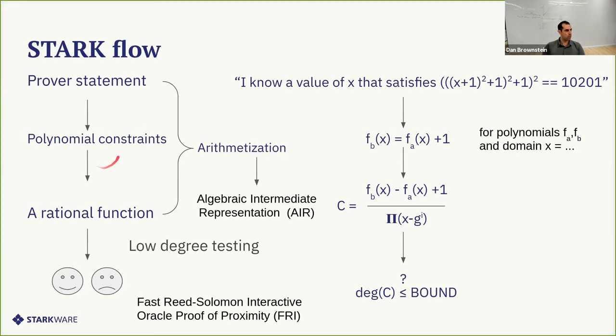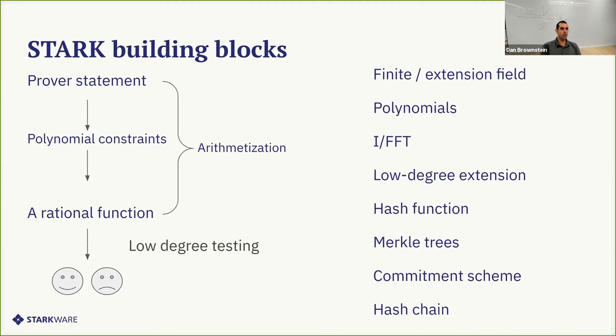So the reduction between a statement and rational functions such that the statement is a true statement if and only if the rational function is of a bounded degree. This is a part of the protocol. It's just like R1CS. We use algebraic intermediate representation and for low degree testing, we use a FRI protocol. And for Reed Solomon, there's a code proof of proximity.